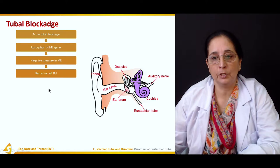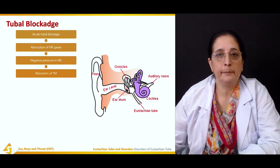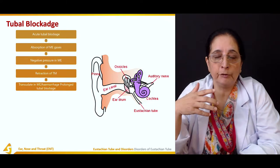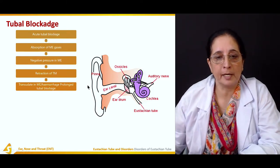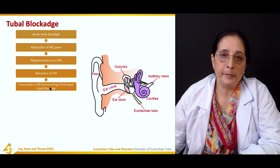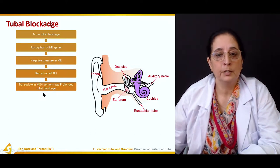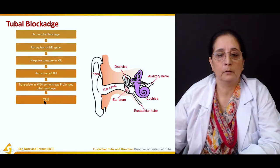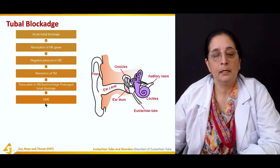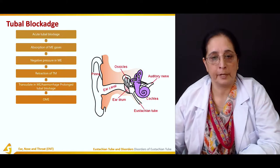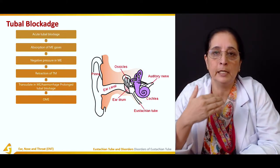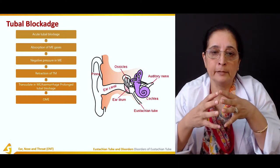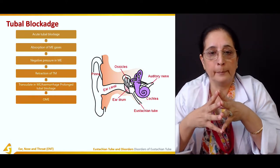This negative pressure can lead to retraction of the tympanic membrane. It can cause retraction of the tympanic membrane. Then with the retraction of the tympanic membrane, there is transudate in the middle ear, and there can be hemorrhage or blood due to prolonged tubal blockage. Then otitis media — middle ear infection — is present.